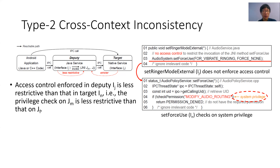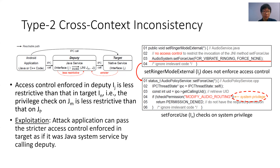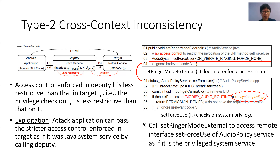Accordingly, since the access control enforced on the JNI method is less restrictive than that enforced on the JNI function, a type 2 inconsistency is found. The attack application can exploit the inconsistency to bypass the stricter access control enforcing the target, as if it were the Java system service, by calling the deputy. For this case, the attack application calls the deputy to access the remote interface setForceUse of audio policy service as if it is a privileged system service, bypassing the access control enforcing the target.